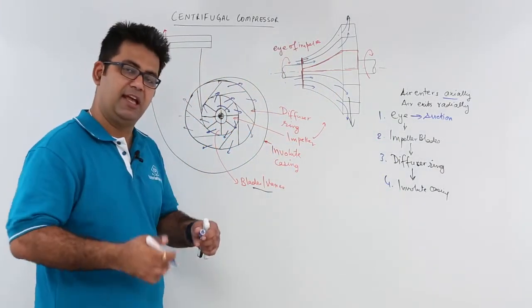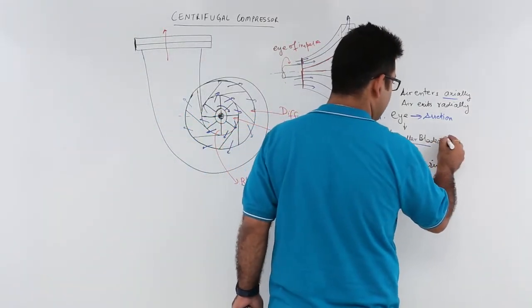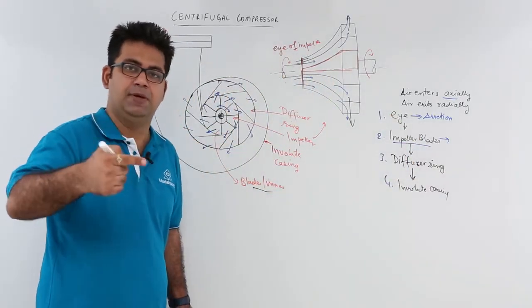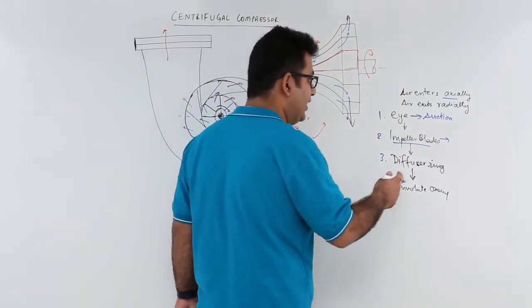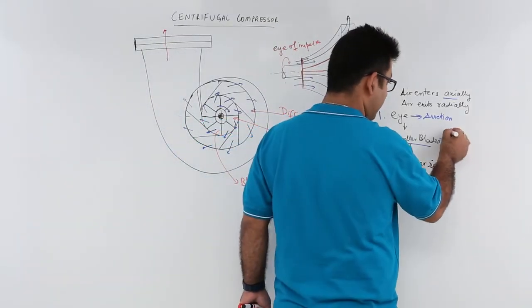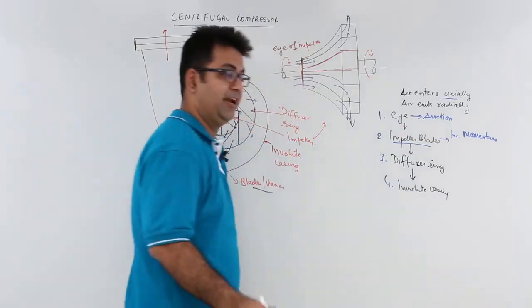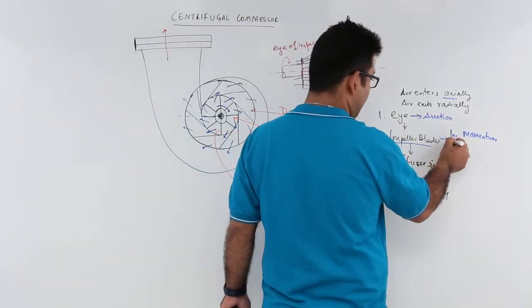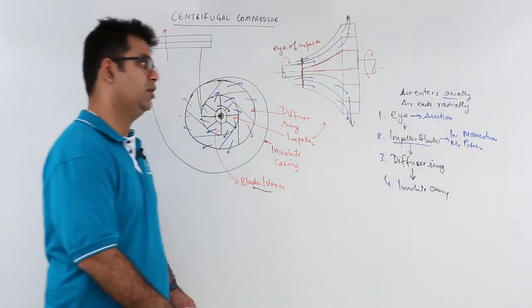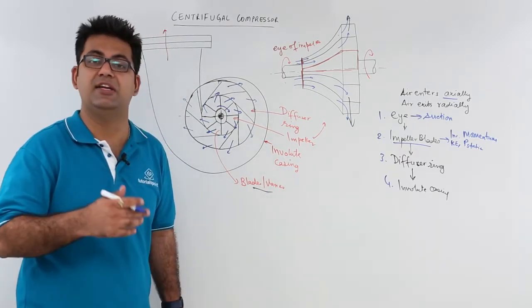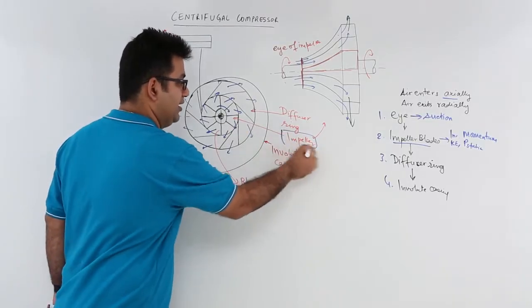Now this air which is sucked in through the eye is taken into the impeller blades. And in impeller blades, due to rotation, the velocity of the air is increased. So that increase in velocity will increase the momentum. It increases momentum. And due to the momentum increase, there is an increase in kinetic energy and some static pressure. So all these things are increased due to the high energy rotation or the centrifugal energy which is being imparted by the rotation of this impeller.